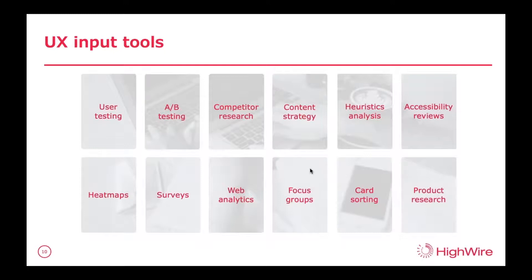Heatmaps facilitate the understanding of how users interact with the content on pages — what do they see, what are they using more, what are they clicking on, what are they scrolling to, where does the interest lie and conversely where does it not. Then we have surveys and questionnaires — there are a lot of tools out there like SurveyMonkey — and these help gather feedback from users in the form of very specific questions. You can also try to get some subjective answers as well, as opposed to the very specific data you might get from heatmaps or A-B testing.